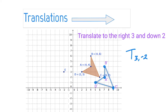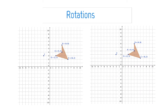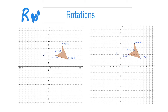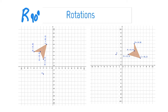Next we're going to look at rotations. Generally what we look at are rotations of 90 degrees, 180 degrees, 270 degrees, and 360 degrees. Usually we rotate the figure counterclockwise. If it says rotate 90 degrees counterclockwise, or sometimes you'll see it as capital R 90 degrees, that means 90 degrees counterclockwise. So if I rotate it 90 degrees, that's a 90 degree rotation.